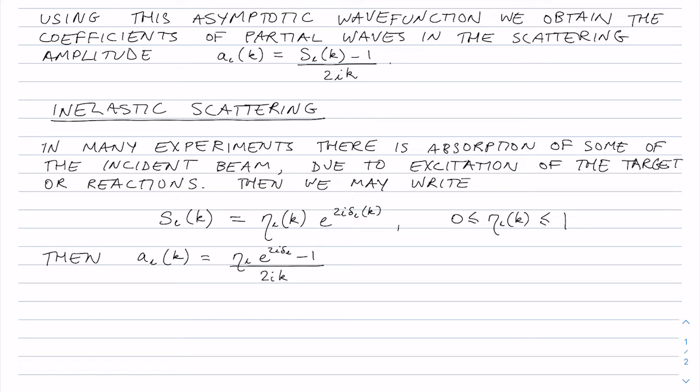Note that I'm dropping the explicit dependence on K here in eta and delta, but they're still there. This eta, by the way, is completely heuristic. We're not pretending to explain the physics of what causes this reduction. It could be something complicated or it could be something very simple, but nonetheless it changes the S matrix in this particular way.